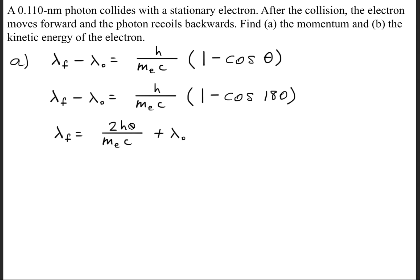And we multiply that by Planck's constant and divide that by the mass of the electron and multiply that by the speed of light, and we're going to add the initial wavelength. Next, we'll substitute in the values for these variables and we'll get a wavelength of 1.15 times 10 to the minus 10th meters.